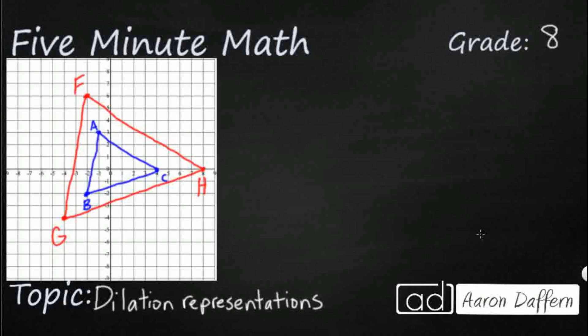We have two different triangles here. Triangle ABC is similar to triangle FGH, and they visually look similar. You can tell that FGH is a little bit larger — it looks like the same shape just at a different scale, and it's all centered around the origin.